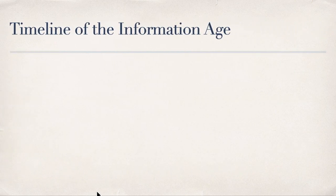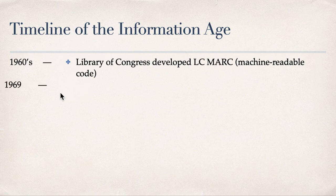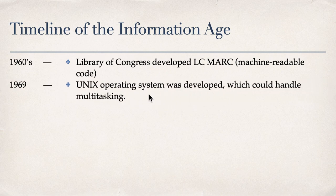We're nearing the 2000s. Around the 1960s, the Library of Congress developed LC-MARC — Machine Readable Code. Then in 1969, the Unix operating system was developed, which could handle multitasking compared to earlier systems.